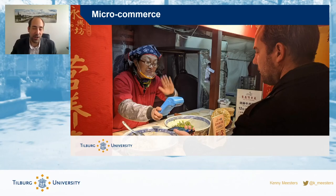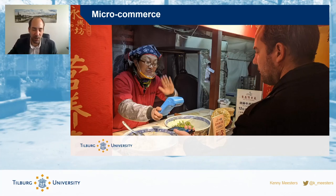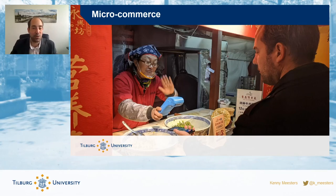Other technologies happening are that within small restaurants, you can order online. Throughout China, this proliferation of technology is not just for big restaurants, organizations, or platforms — it is actually everywhere for consumers. Just a mobile phone with your credits is enough in China to get food, get rides, and so on.